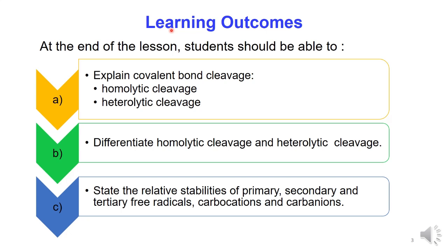Learning Outcomes. At the end of the lesson, students should be able to: A. Explain covalent bond cleavage — homolytic cleavage and heterolytic cleavage. B. Differentiate homolytic cleavage and heterolytic cleavage. C. State the relative stabilities of primary, secondary, and tertiary free radicals, carbocation ions, and carbanion ions.